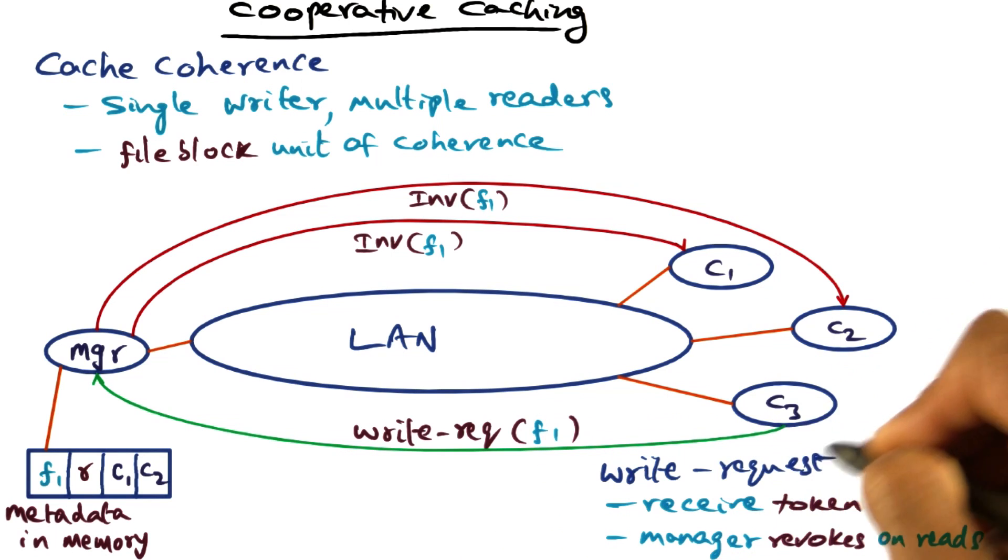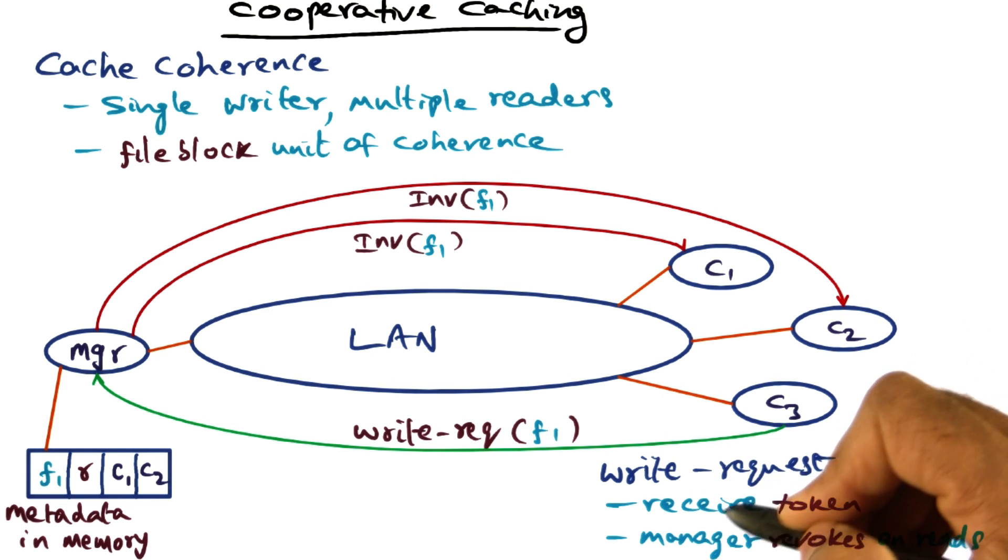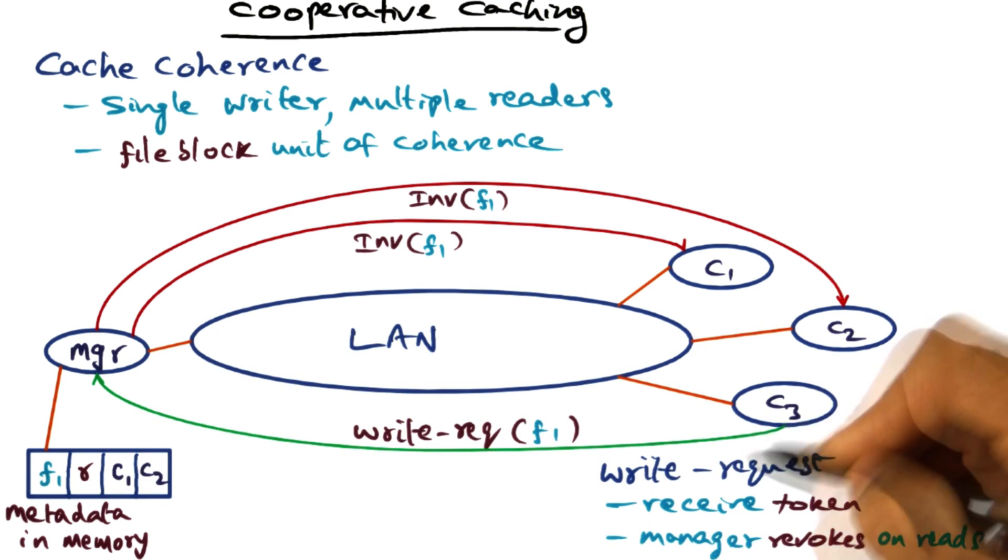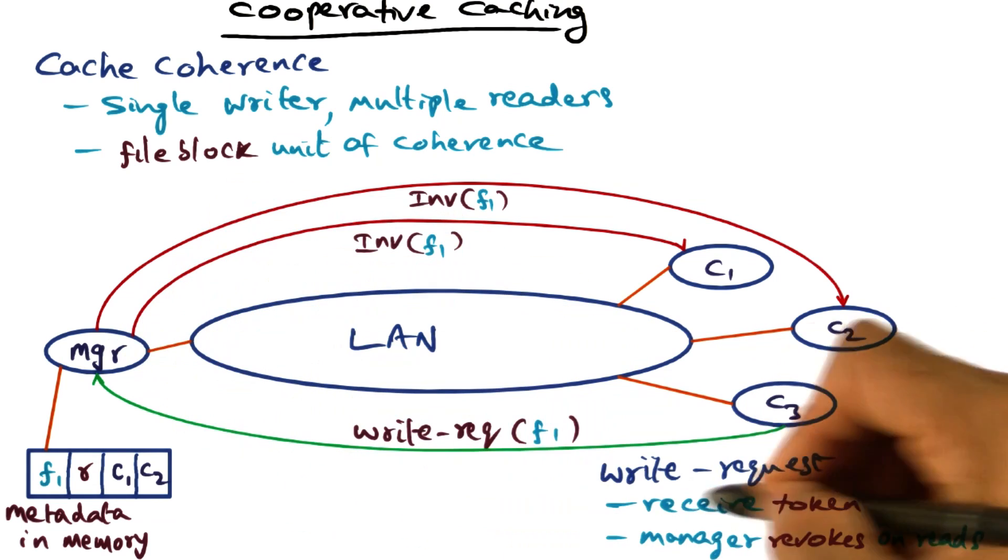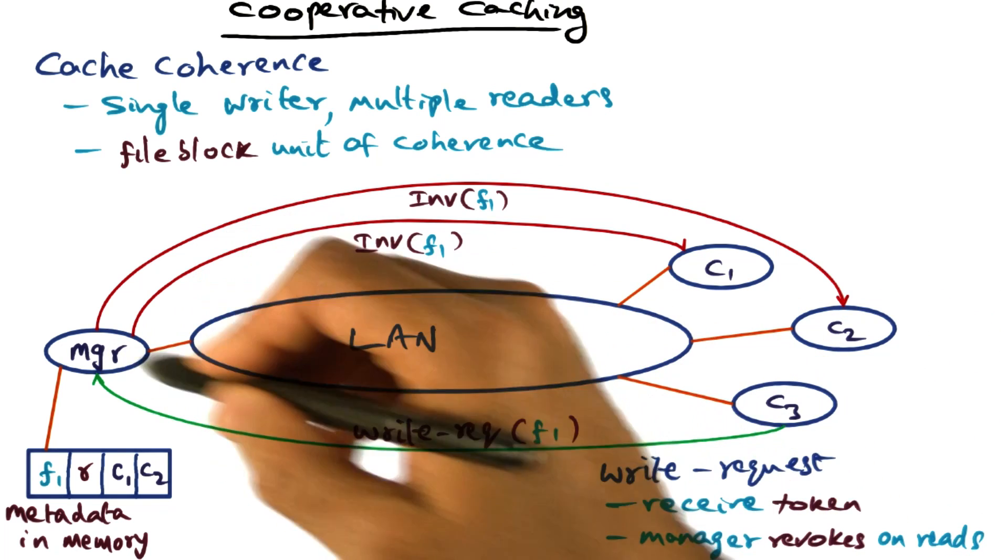So at the end of this exchange, C3 will have the right to write to this particular file. Now how long does it have that privilege? Well, the write request, when it is granted, the client gets a token. And the manager, at any point of time, can revoke the token that it has given to C3. And this in particular will happen when a future read for the same file comes to the manager.